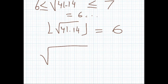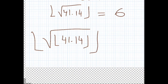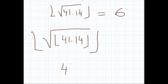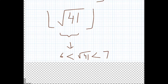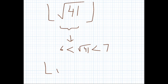Now for the right-hand side with x = 41.14: the floor of 41.14 is 41, and the square root of 41 is also between 6 and 7, so the floor of the square root of the floor of x is also equal to 6. The two sides match.